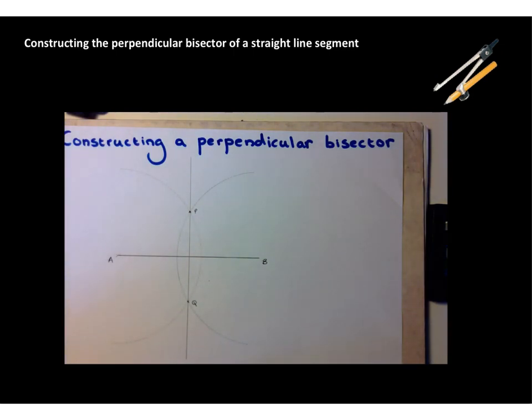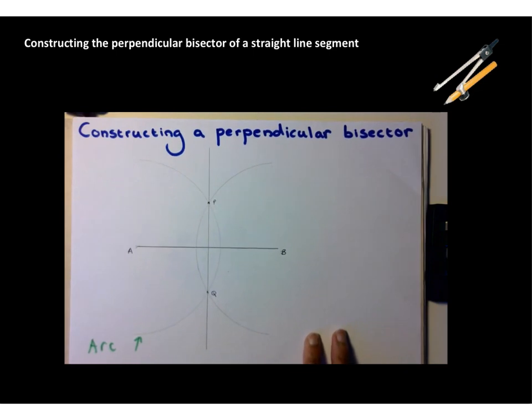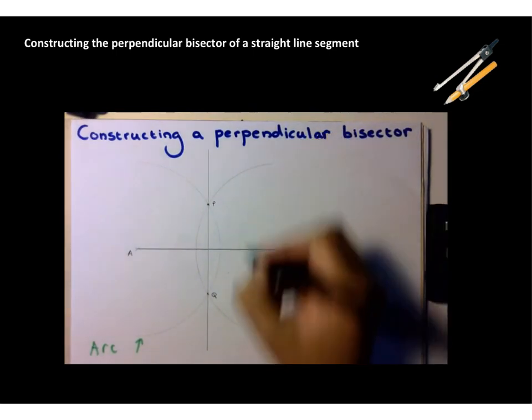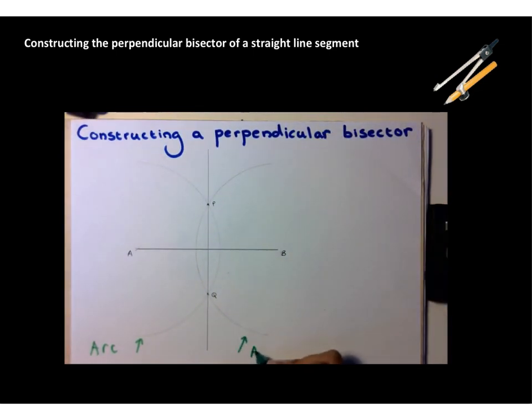Now, what have we done? Let's label a few things on our diagram so we're clear as to what they are. Here we have an arc, which is centered at point A, and here we have another arc, which is centered at point B.